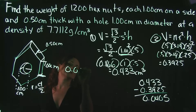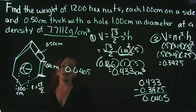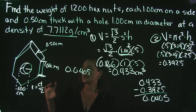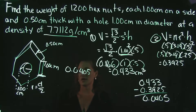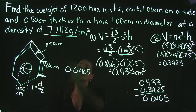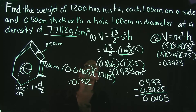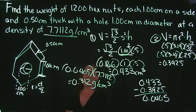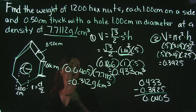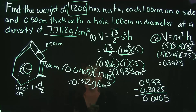Now we multiply the hex nut volume by its density. Different metals and materials weigh different amounts, so density matters here. Taking 0.0405 times 7.7112 gives us 0.312 grams — the weight of one hex nut.